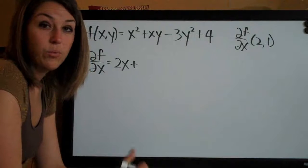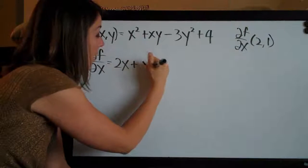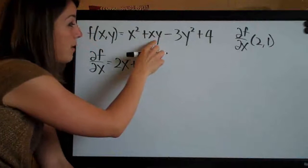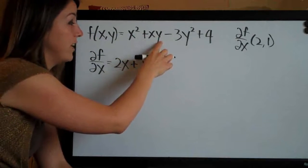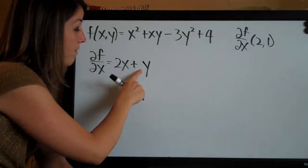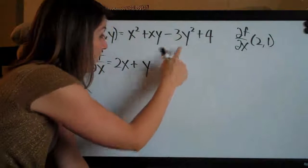then you realize that the derivative in this case is actually just y, because the y becomes like a coefficient on the x term here when we treat it as a constant. So the derivative with respect to x of that second term is y.